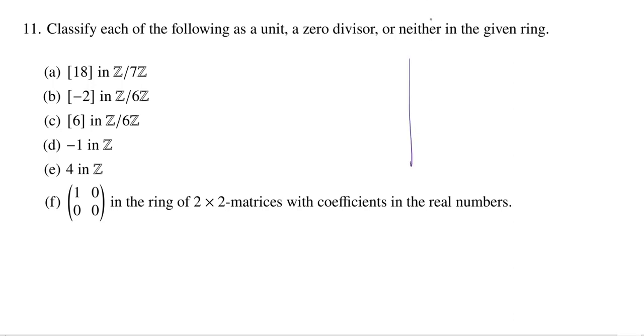In Z mod nZ, the class of A is a unit if and only if the greatest common divisor of A and n is 1. And the class of A is a zero divisor if and only if the GCD of A and n is greater than 1.